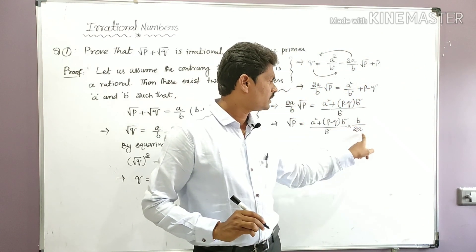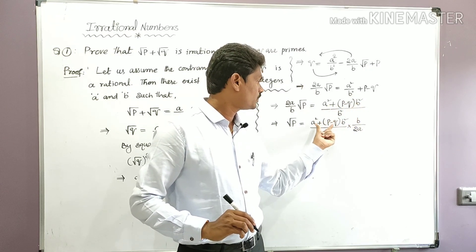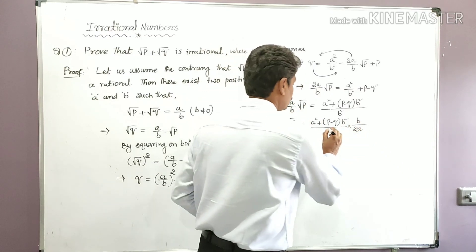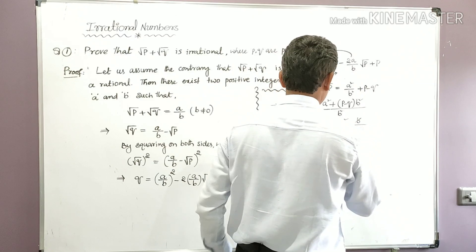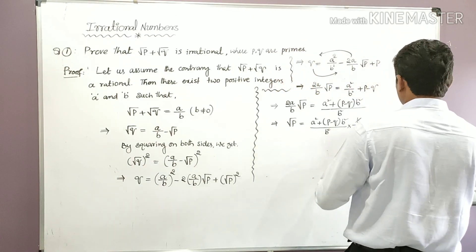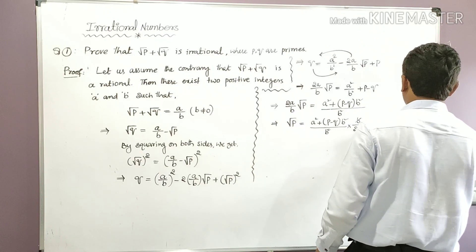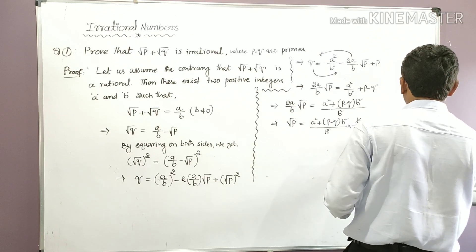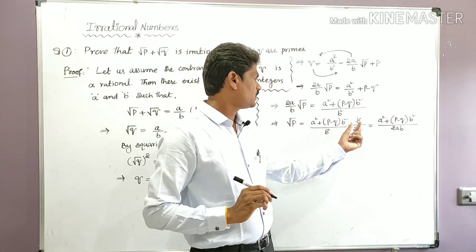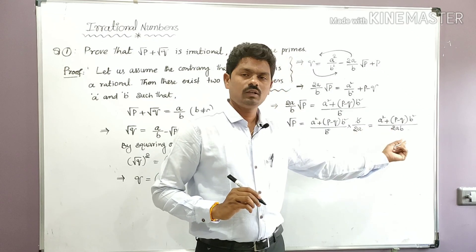Now take 2a/b to the right side. So √p = (a² + (p − q)·b²) / b² × b/(2a). One b from b² gets cancelled, giving √p = (a² + (p − q)·b²) / (2ab). Since a and b are positive integers, this expression is a rational number.